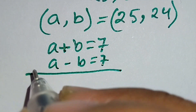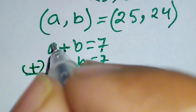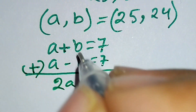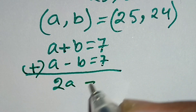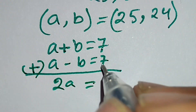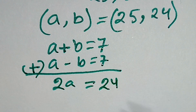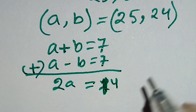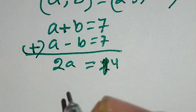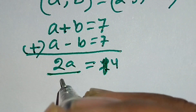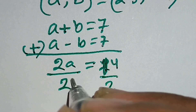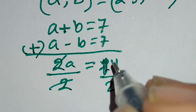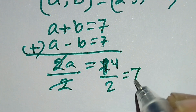So a plus b equals 7 and a minus b equals 7. Adding these two equations: a plus a equals 2a, and b minus b cancels out, giving 7 plus 7 equals 14. Dividing both sides by 2, the 2s cancel, and 14 over 2 equals 7.